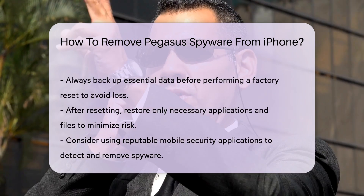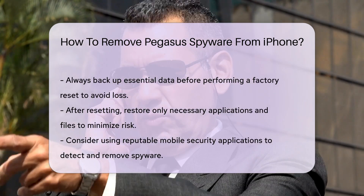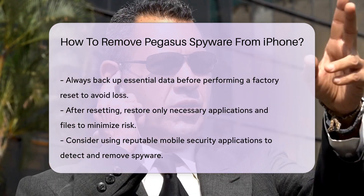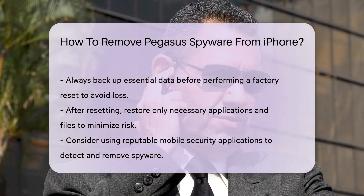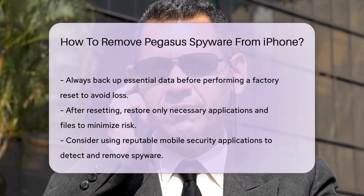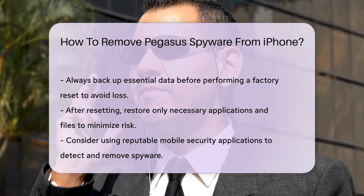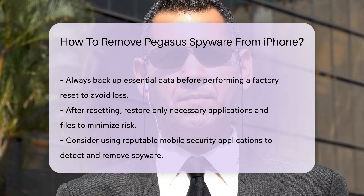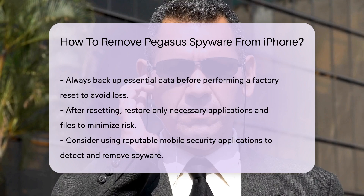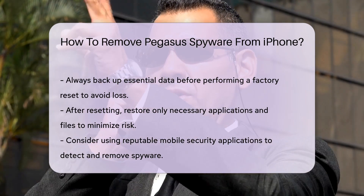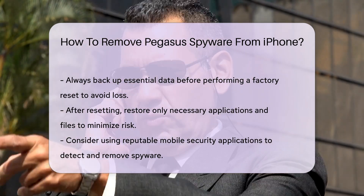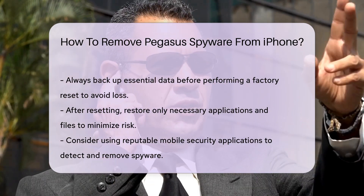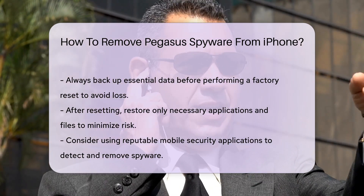Consider using mobile security applications designed to detect and remove spyware. These tools can provide an additional layer of protection. Ensure that any security app you choose is reputable and has positive reviews. In addition, review app permissions regularly and limit access to sensitive data and features.